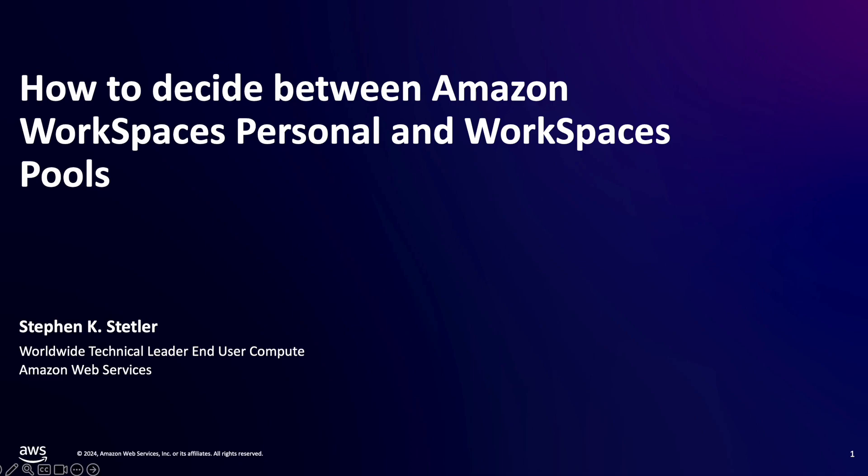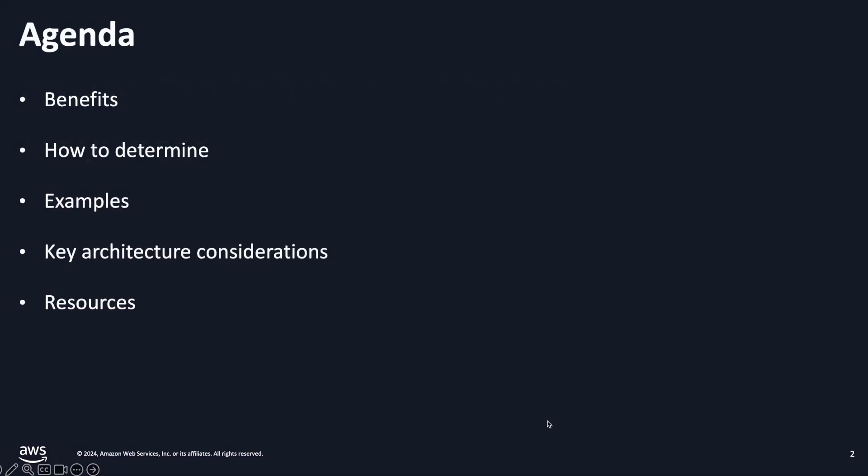On the agenda, I'll first cover what the benefits of having both Amazon Workspaces desktop options means for you. Then I'll cover examples of use cases and which Amazon Workspaces desktop type is best for each. And finally, summarize the key architecture considerations for each and direct you to some resources to continue your learning journey of the Amazon Workspaces family of services.